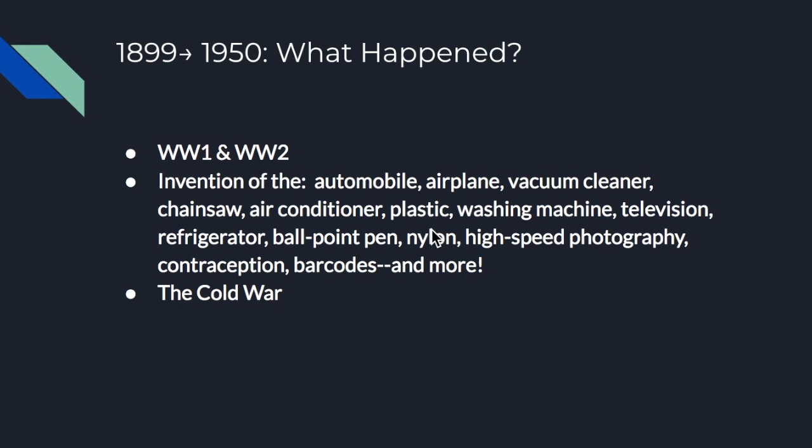Most of our literature that we're reading this week comes from the first 50 years of the 20th century, so let's just take a look at what happened in those 50 years. First we have World War One and World War Two, major conflicts that I'll return to later. Thinking about what day-to-day life looked like for most people, between 1899 and 1950 we see the invention of the automobile — cars and trucks for the first time on the road — the invention of the airplane, the vacuum cleaner, the chainsaw, and the air conditioner. All of these modern conveniences that suddenly make it so much easier to clean your house, chop down a tree, and just to keep cool in the hot summer.